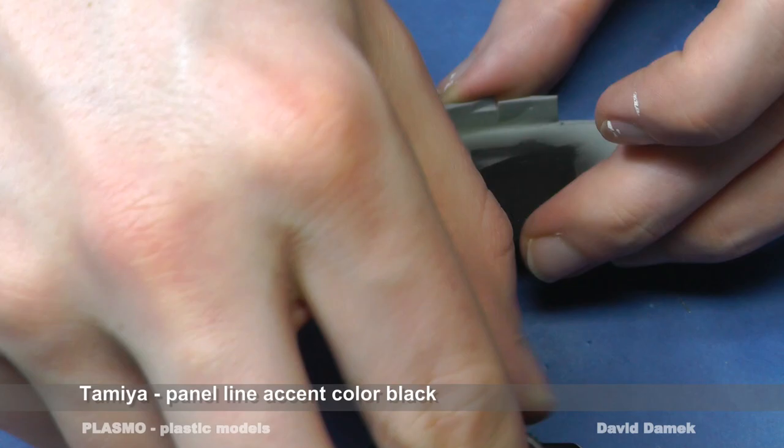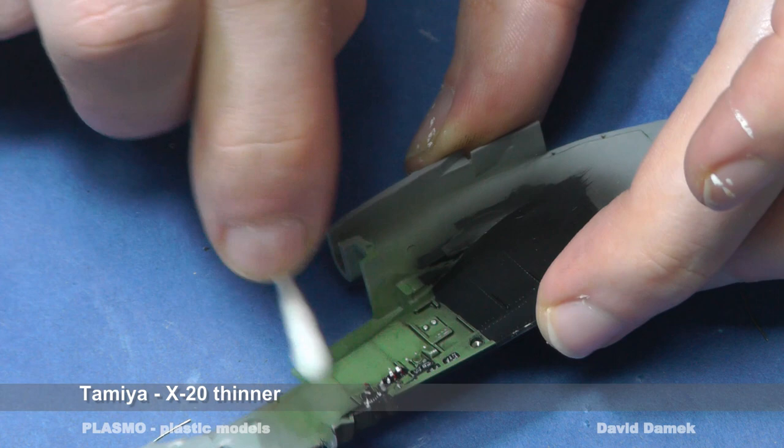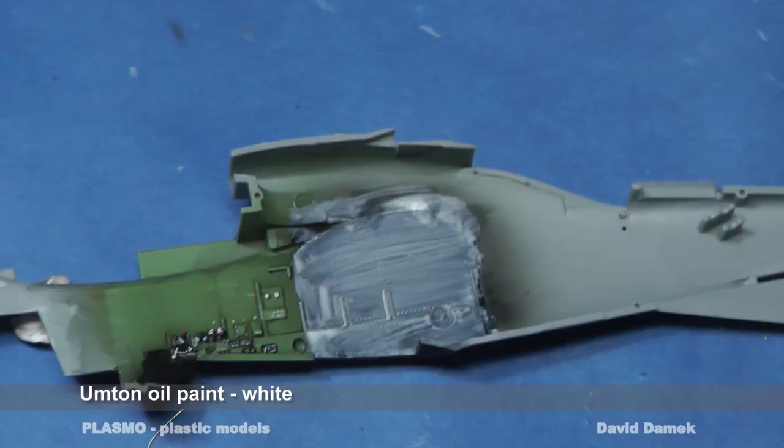You can use original washes or you can use conventional oil paint diluted with X-20 thinner. You can achieve very similar results with both products.